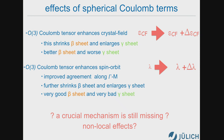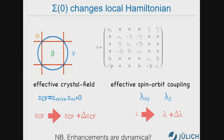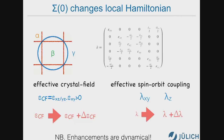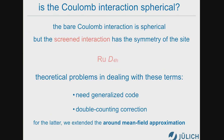One might think non-local effects not taken into account in dynamical mean-field theory are the explanation. But we found a simpler and more general mechanism. The Coulomb interaction we should use in this model — typically we use a spherical Coulomb interaction as in the atomic limit — but when you take into account Wannier functions and screening, the Coulomb interaction is not spherically symmetric. If you look at cRPA results, they show a tetragonal contribution in this system. This should be taken into account, but it is typically difficult because you need a generalized quantum Monte Carlo solver and a proper double counting correction. We solved these issues with our code, so we could now include these terms.